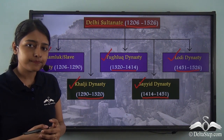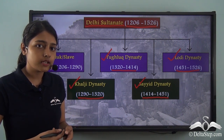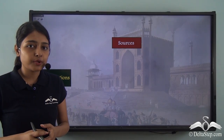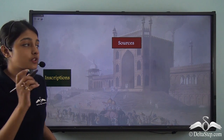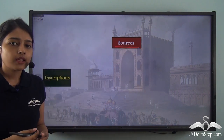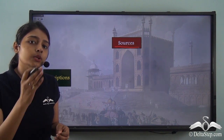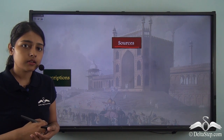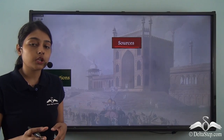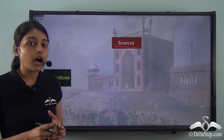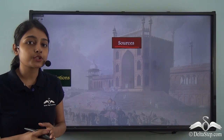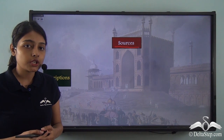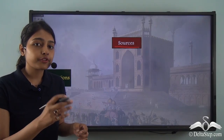A key question is: how do we know about these dynasties? These dynasties existed in the medieval period, hundreds of years back. How do we know which ruler ruled from which year, or what the systems of governance were? This brings us to discussing the sources of the Delhi Sultanate. There were quite a few: the first among them would be inscriptions.